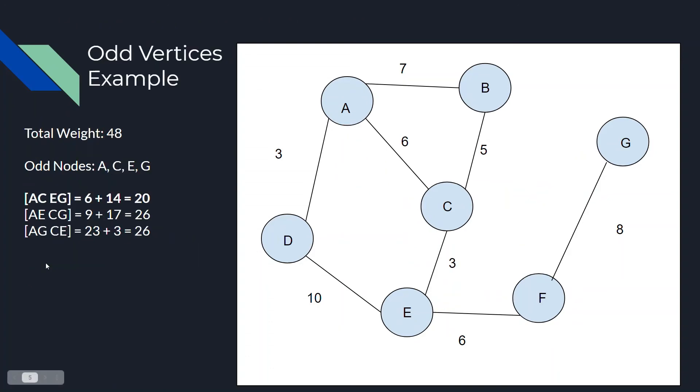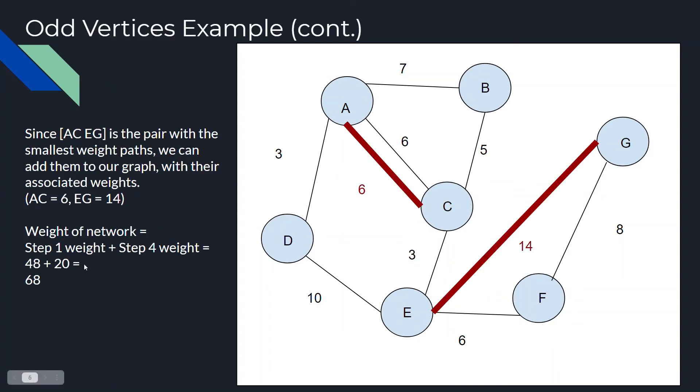So, all we have to do, our step 1 weight was 48. And our step 4 weight is 20. So, that's simply 48 plus 20. That's 68.